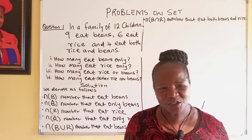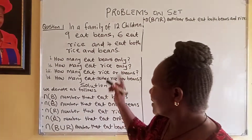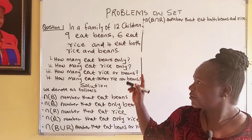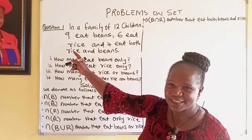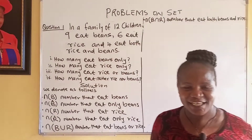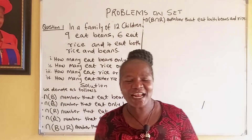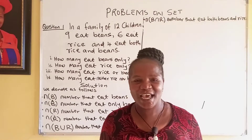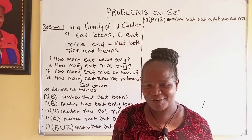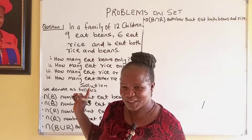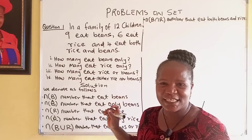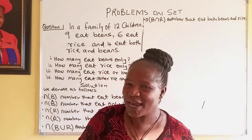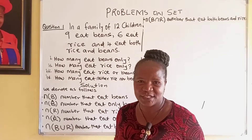When you are given such questions, look at it very well. In a family of 12, you have 9 that eat beans and 6 that eat rice. If you say 9 plus 6, what would be the answer? 9 plus 6 is 15. Are they up to 15? No. So there is a possibility that there are some that eat beans and still eat rice. Let's look at how to tackle questions like this.